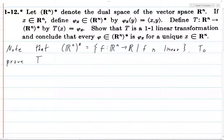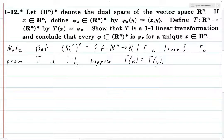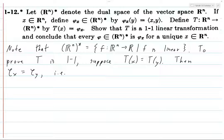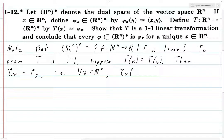To prove T is one-to-one: suppose T(x) equals T(y). We want to prove that x equals y. So then phi_x equals phi_y. These are two functions, and saying they are equal means that plugging in any value into both functions gives the same answer. So for every single z in Rn, phi_x(z) equals phi_y(z).